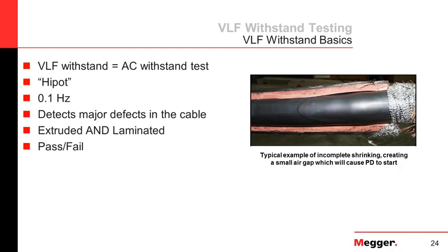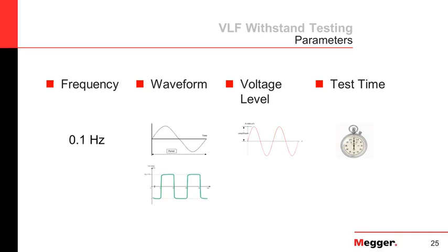There's an example on the right-hand side showing a bubble in the heat shrink where someone didn't shrink it all the way, causing partial discharge or little discharges to occur, which caused a breakdown. Something as simple as incomplete shrinking can cause a breakdown — and this is what a VLF test could detect. To run the test you need to know four parameters: frequency, waveform, voltage level, and test time. Frequency is easy — use 0.1 hertz. For waveform you have two options: sinusoidal and cosine rectangular.